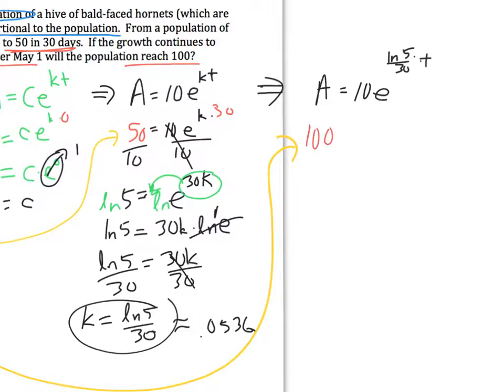This time I'm going to be able to look for t because I've got everything else. Putting in 100 for my amount of population, so I've got 100, t is going to be my unknown, equals 10e^(ln(5)/30 times t). I know it looks scary, just go with it. We get a little more algebra practice here. Divide by 10 on both sides, I get 10 equals e^(ln(5)/30 times t).